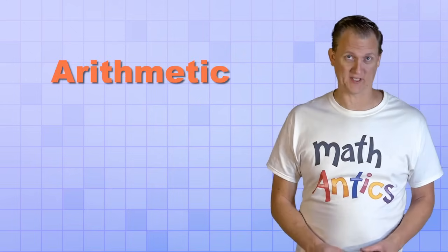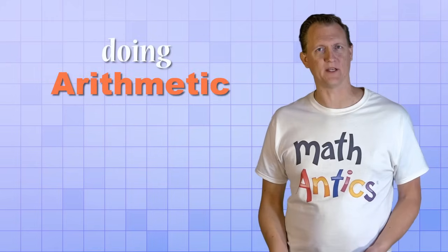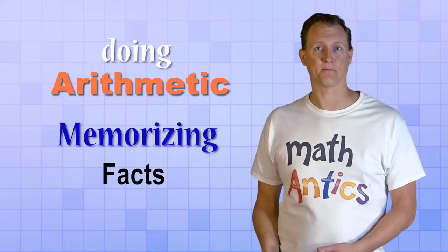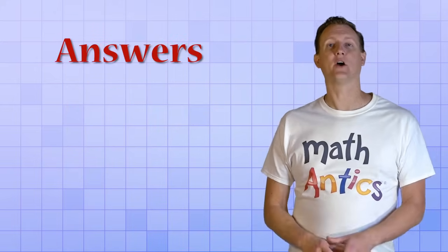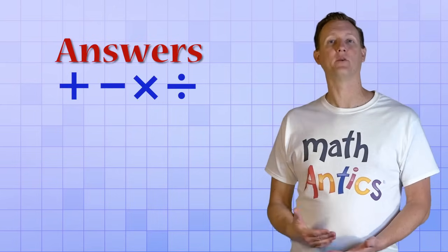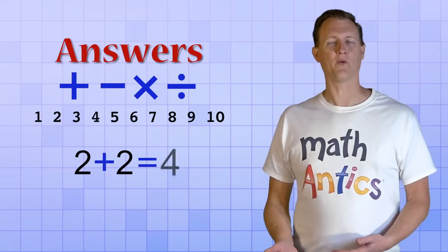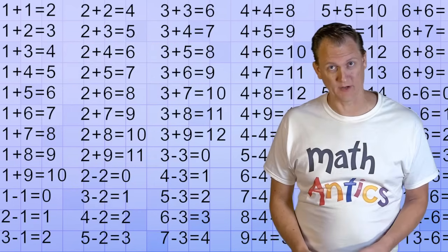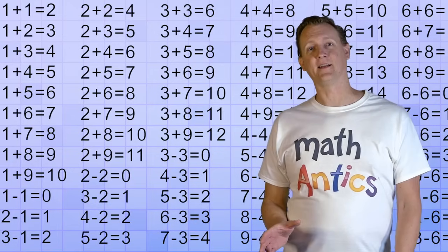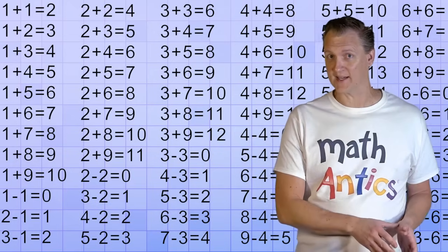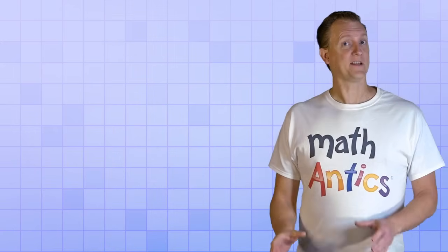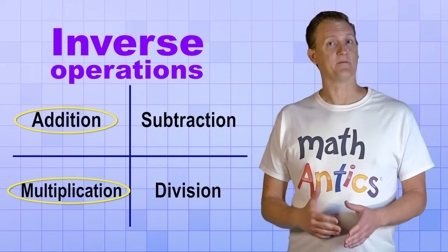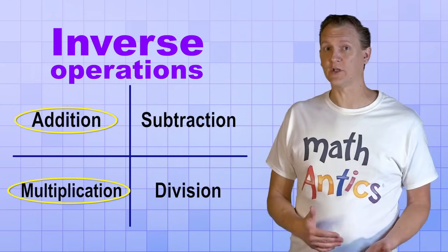Alright, we've learned a lot about arithmetic so far. But when it comes to actually doing arithmetic, it's really helpful to start off by memorizing some of the basic arithmetic facts. That usually involves memorizing the answers to all the arithmetic problems that can be made from the numbers 1 through 10, like 2 plus 2 equals 4, or 3 times 4 equals 12. That sounds like a lot of facts to memorize! But fortunately, because of the two things we just learned about arithmetic, it's not as bad as it sounds. Thanks to inverse operations, you really only have to memorize the facts for addition and multiplication, because if you know them, you can easily figure out the subtraction and division facts from them.